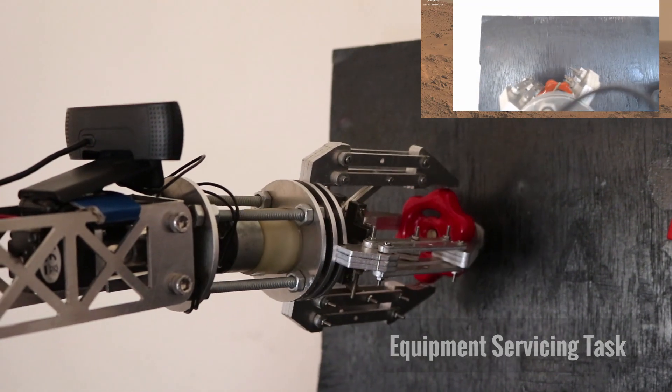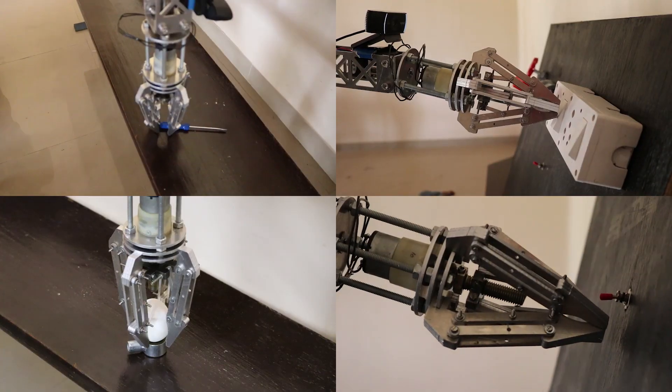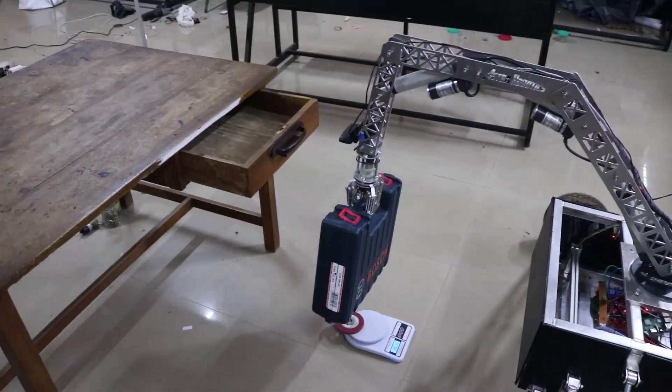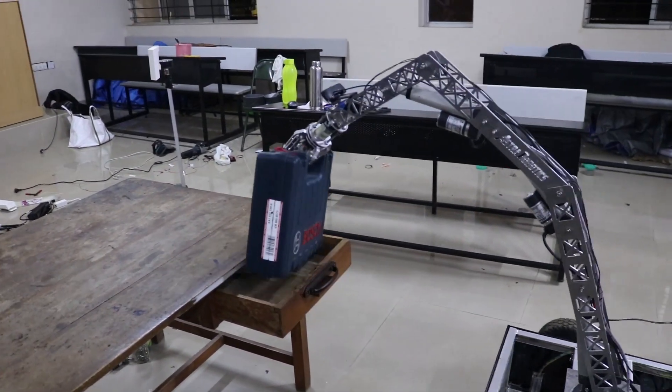For the task of lifting and carrying objects, a custom built 4 prong gripper has been used. We have extensively tested the robotic arm to meet the intricacies of the equipment servicing task.